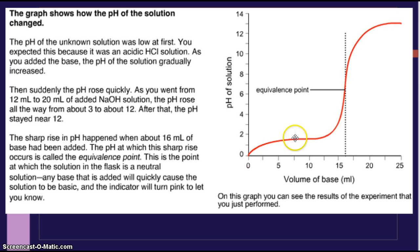Okay? The sharp rise in pH, this big jump, happened at about 16 milliliters of base had been added. The pH at which the sharp rise occurs is called the equivalence point. You do not need to know that word. This is the point at which the solution in the flask is a neutral solution, the flash of pink. Any base that is added will quickly cause the solution to be more basic, and the indicator will turn pink to let you know that it did.